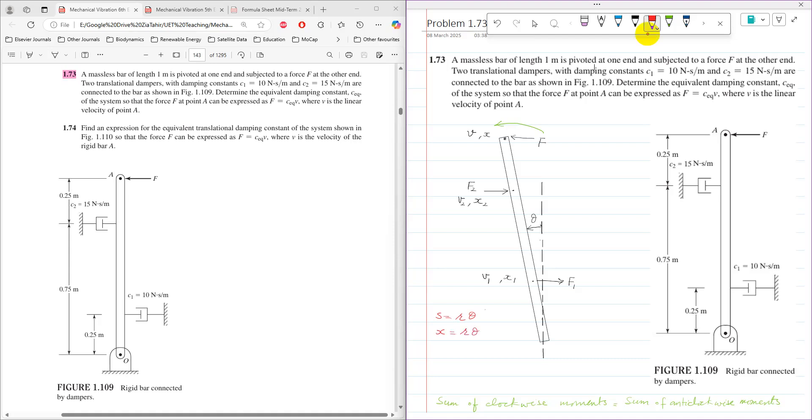If I differentiate both sides, it becomes X dot equals R theta dot, where X dot is velocity equals R theta dot. Using this relationship, I can find velocities V1, V2, and V in terms of the common variable theta dot.